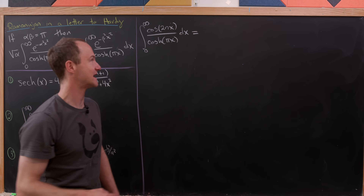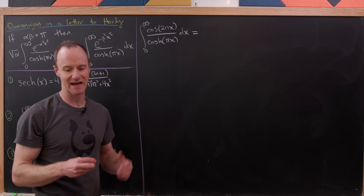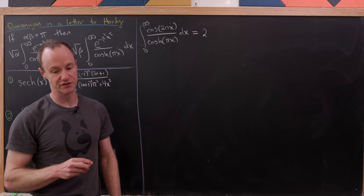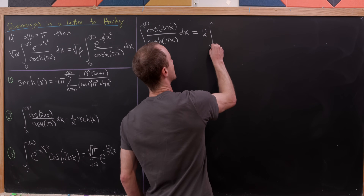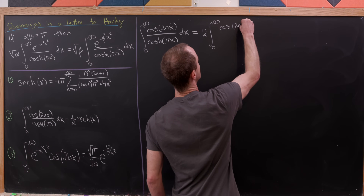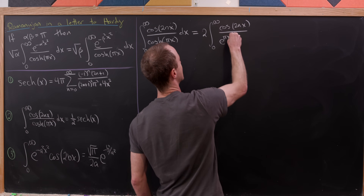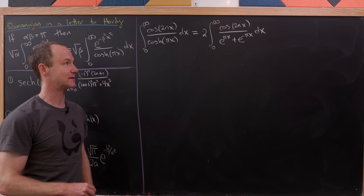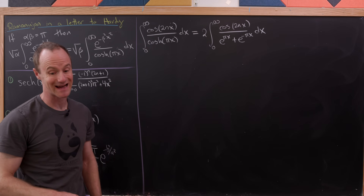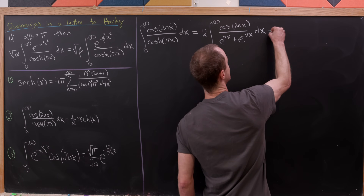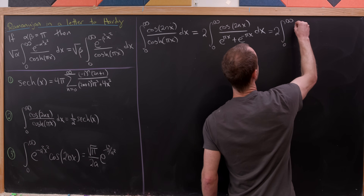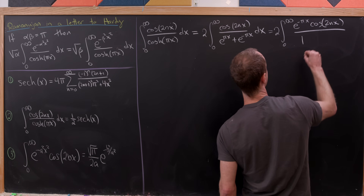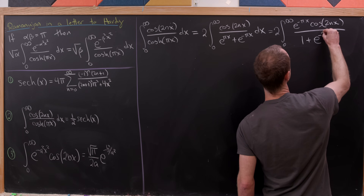We replace the hyperbolic cosine in the denominator with its exponential form. Since cosh is the sum of exponentials over two, the two flips up to the numerator. We have the integral from zero to infinity of cosine(2nx) over e^(pi x) + e^(-pi x). Then we factor e^(-pi x) out of the denominator, leaving two times e^(-pi x) cosine(2nx) in the numerator, and one plus e^(-2pi x) in the denominator.